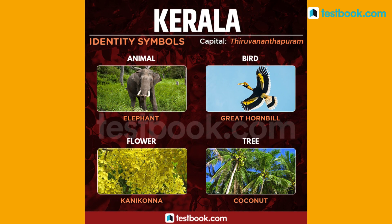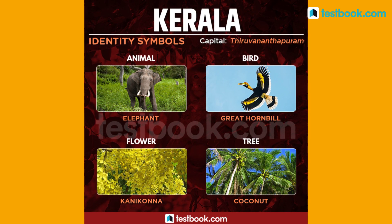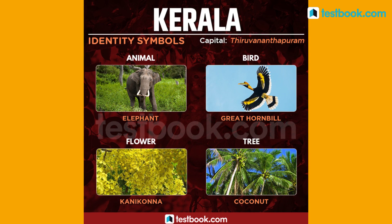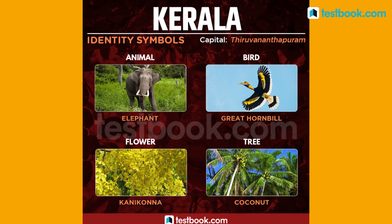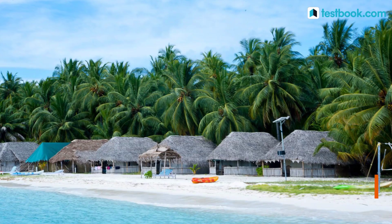Kerala's state animal is Elephant, state bird is Great Hornbill, state flower is Kannikonna and state tree is Coconut.